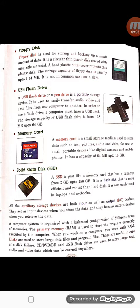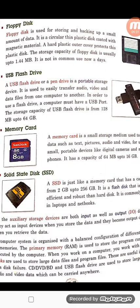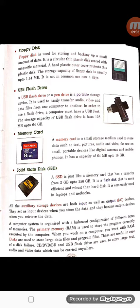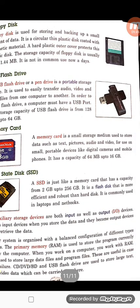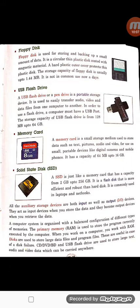The last one is solid state disk. A solid state disk, or SSD, is just like a memory card — very light, chip-like, very portable, and very small in size. Just like a memory card, a solid state disk has more storage capacity than all the devices we have read till now. A solid state disk has a capacity from 2 GB up to 256 GB. It is a flash disk that is more efficient and robust than a hard disk. It is commonly used in laptops and netbooks as a storage device.